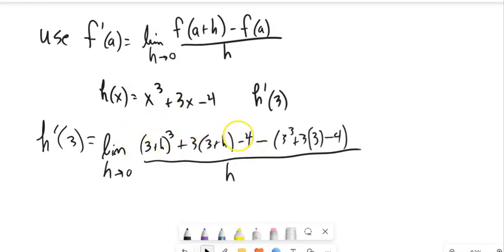Notice where the parts are coming from. This first part is f of a plus h, this is f of a, this is h, my wiggle. I'm going to let that wiggle go to 0. So I've got a little bit of algebra to do here.